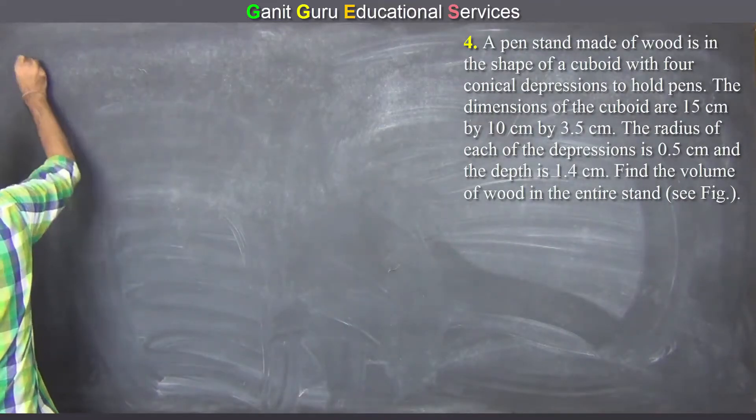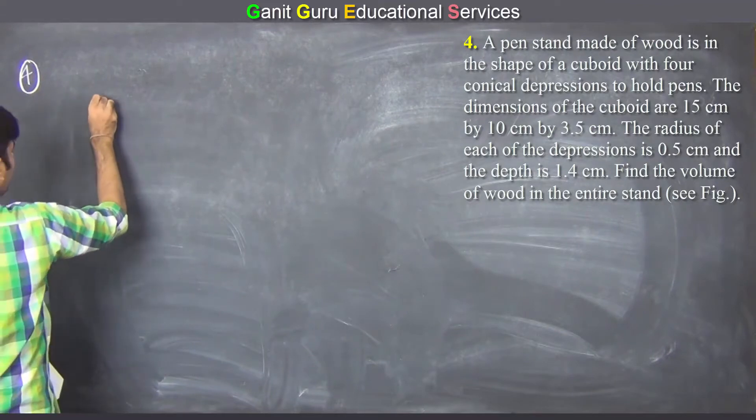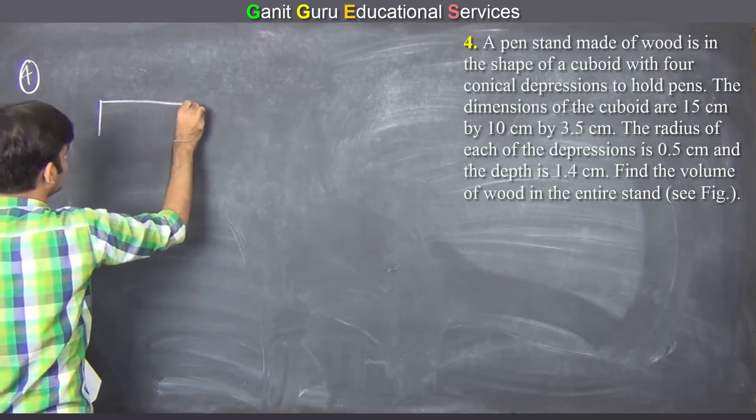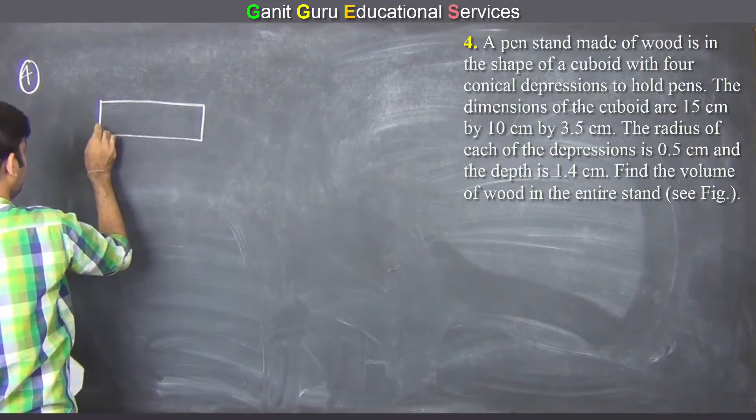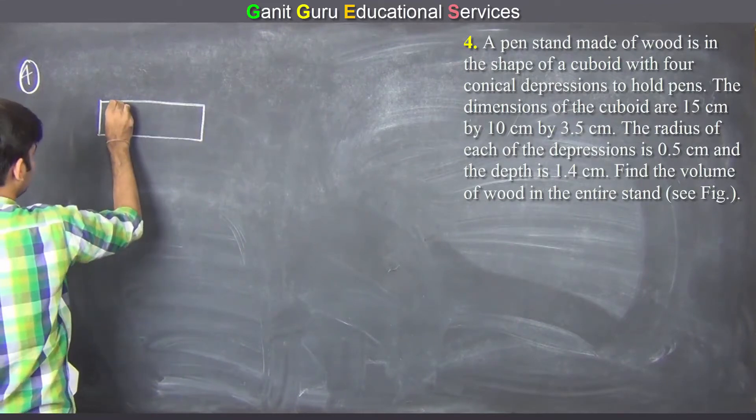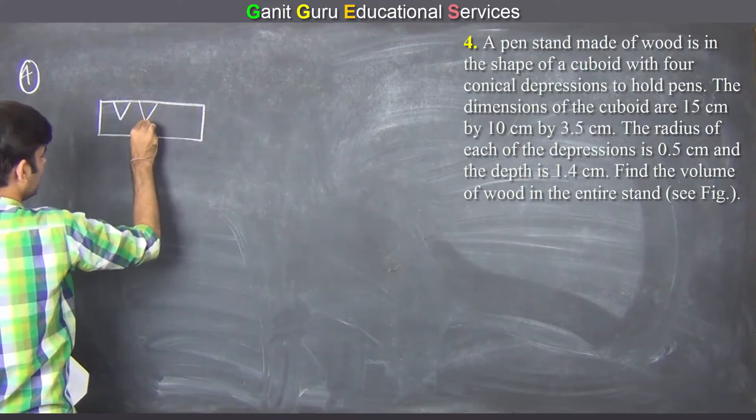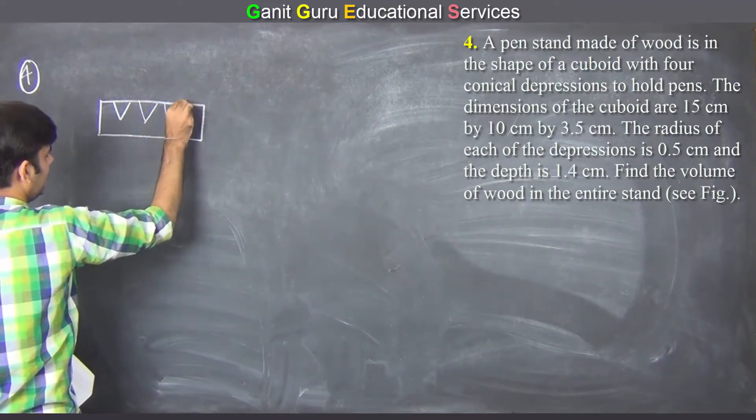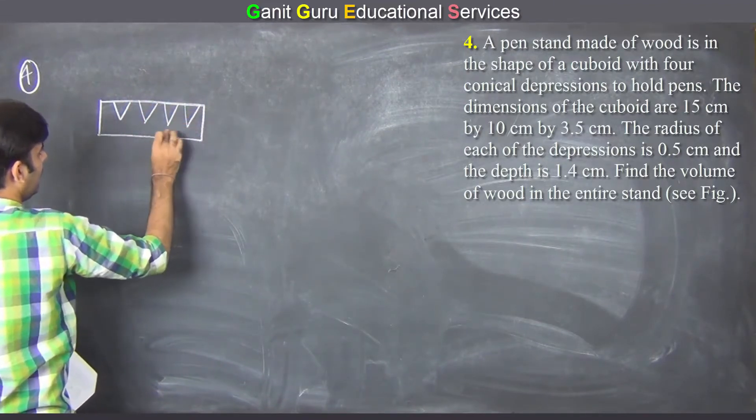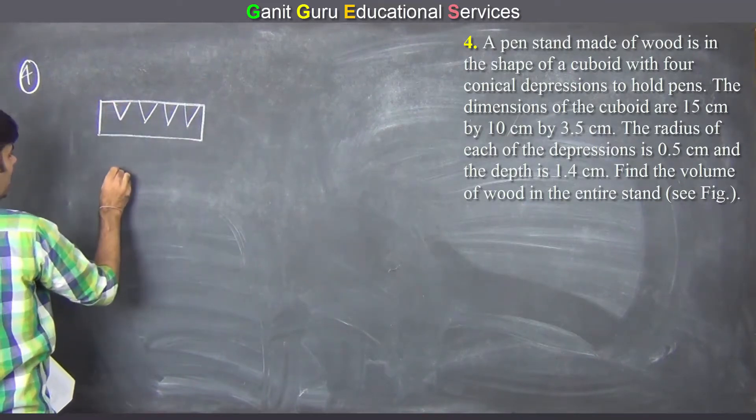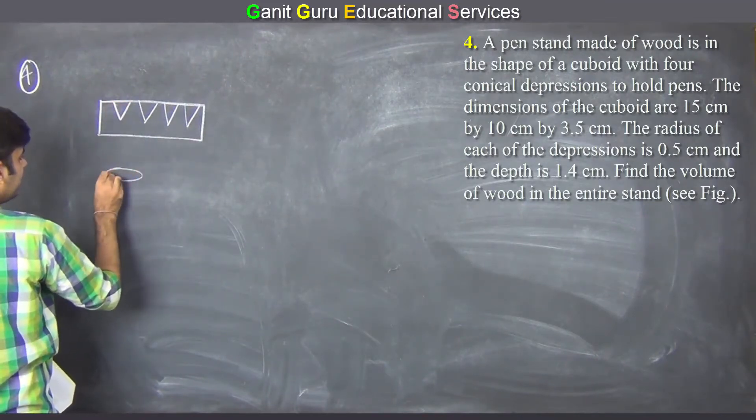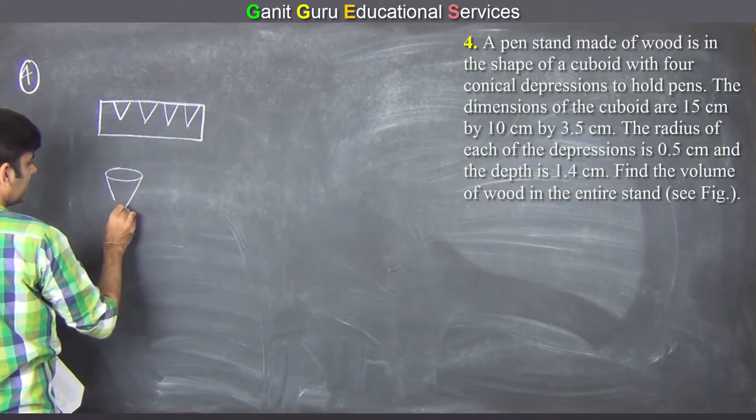Question 4. This is a cuboid from which cone is cut, total 4. This is cone cut. This is a hole.